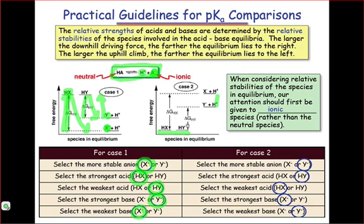So here we see that in going from the associated form to the dissociated form, it's Hy that has the smaller energy climb. Hx has to climb a larger hill in order to get to its dissociated forms.